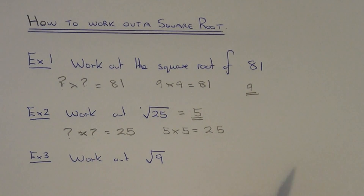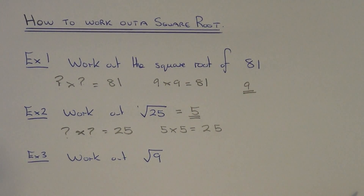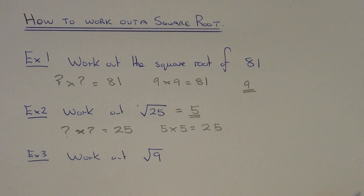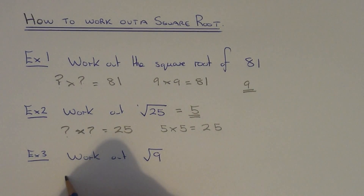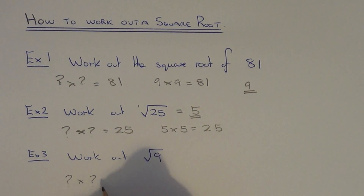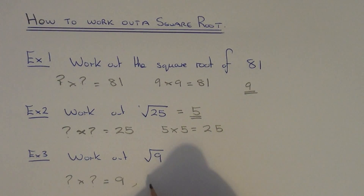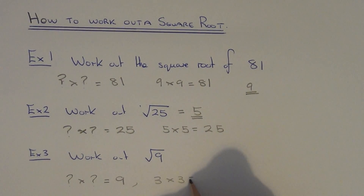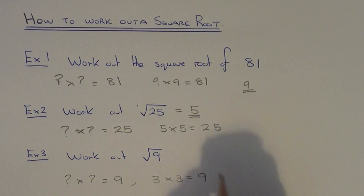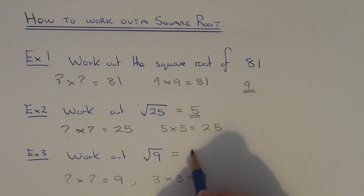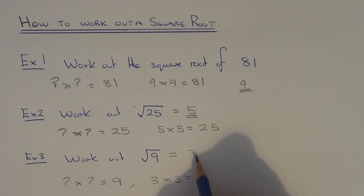So final example, example three. We need to work out the square root of 9. Again we're looking for something times something that gives us 9. The number we're looking for is 3 because 3 times 3 equals 9. So our answer to the square root of 9 is 3.